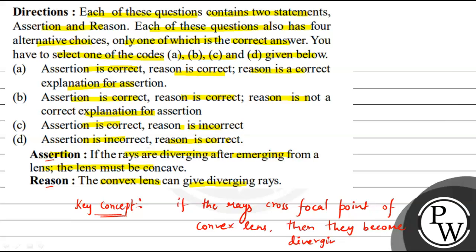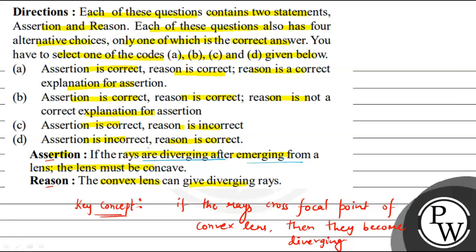The assertion is: if the rays are diverging after emerging from a lens, the lens must be concave. Now we have seen from our lens diagram that a convex lens can also produce diverging rays, so the assertion is wrong. Now for the reason: the convex lens can give diverging rays. We have seen from our lens diagram that this is indeed a fact that convex lenses can give diverging rays. So the reason is correct.